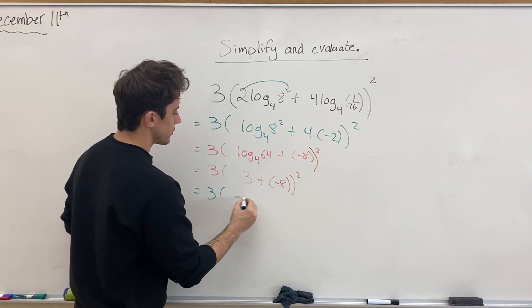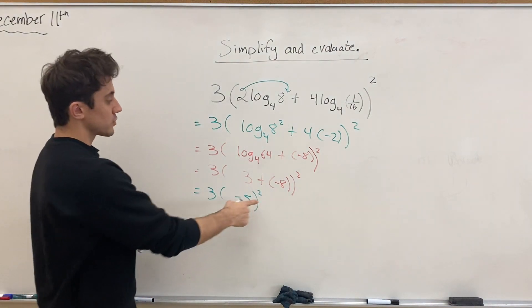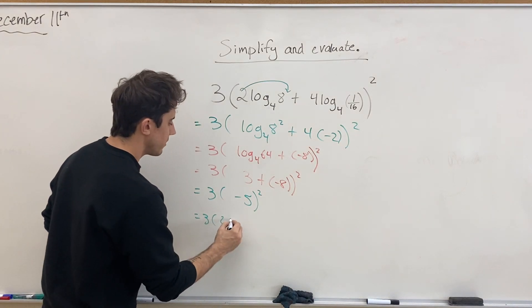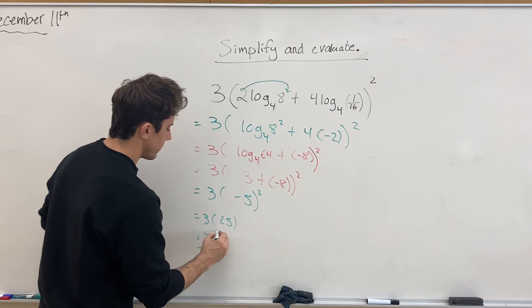We have 3 plus negative 8, which of course is negative 5, all squared. The squared is not attached to the 3, right? And so we have 3 times negative 5 squared is 25 for a final value of 75, okay?